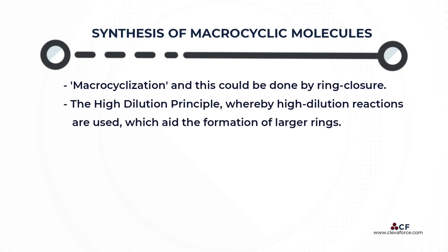The synthesis of macrocyclic molecules is known as macrocyclization, and this can be done by ring closure. However, ring-closing reactions do not favor the formation of large rings — only small rings or polymers tend to form.